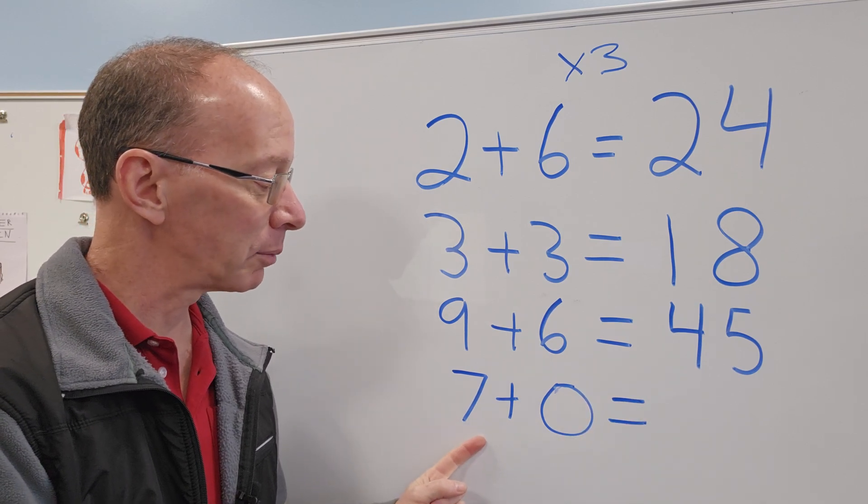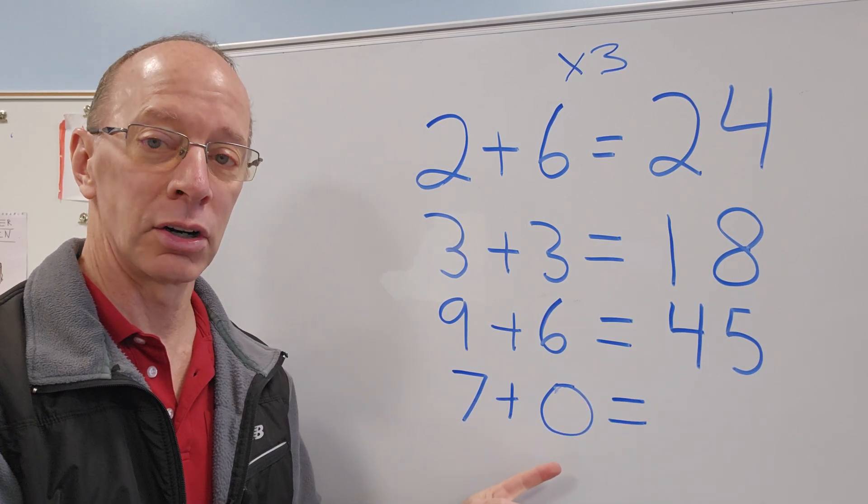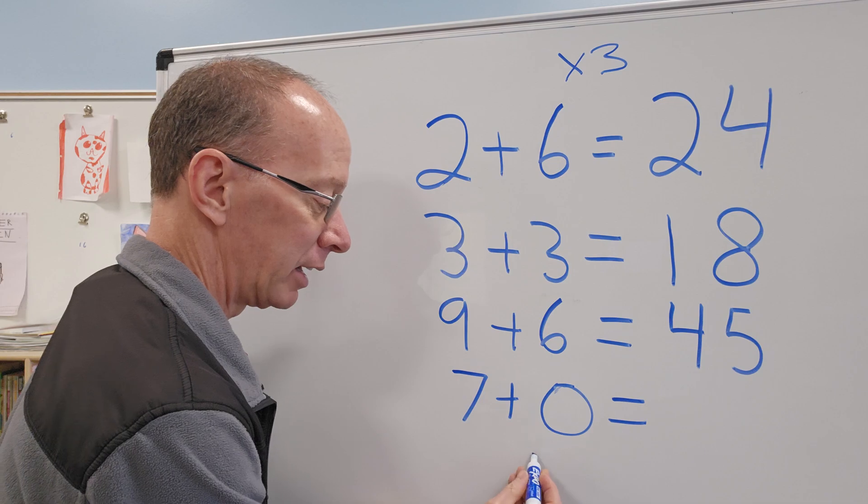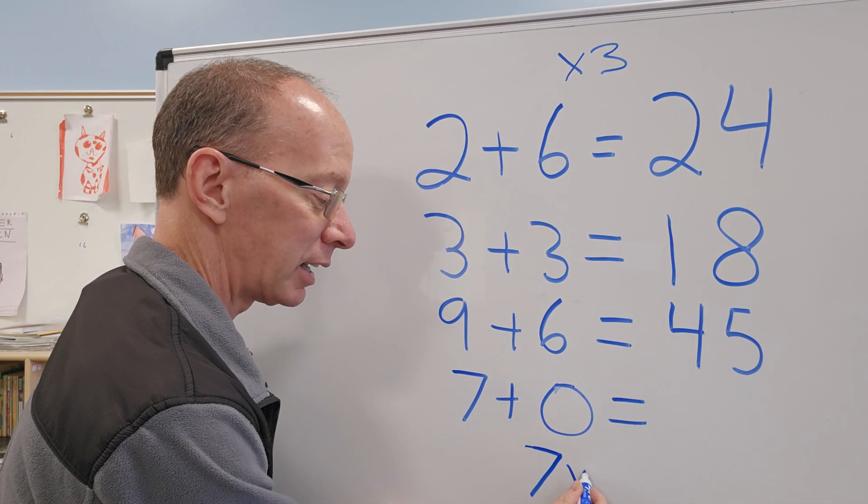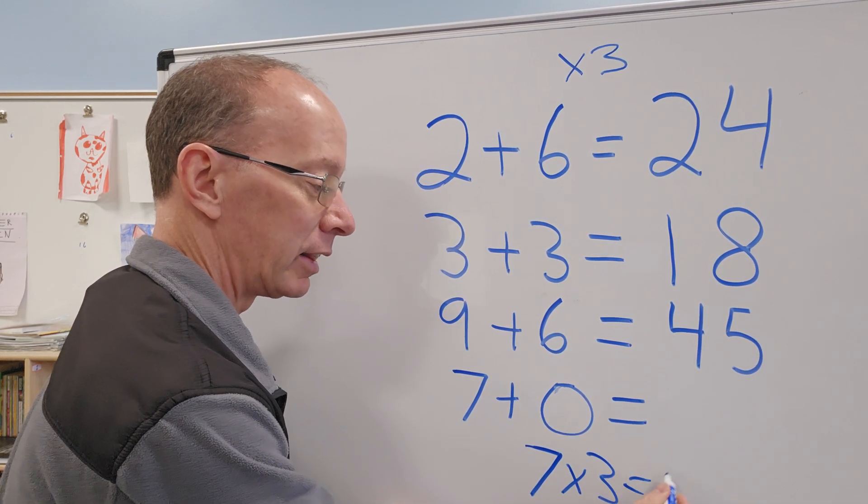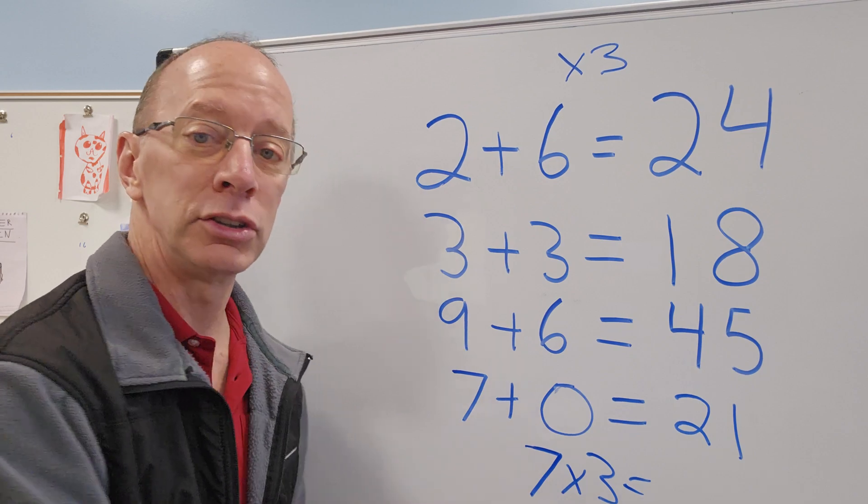So for this one, I'm going to take 7 plus 0, which is 7, and then I'm going to multiply it times 3, and that would give me the answer of 21.